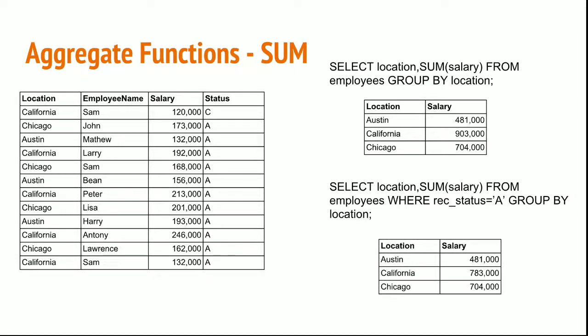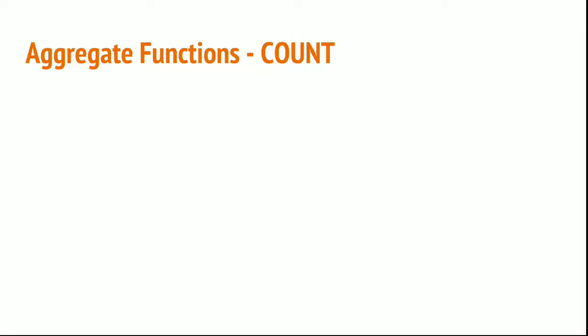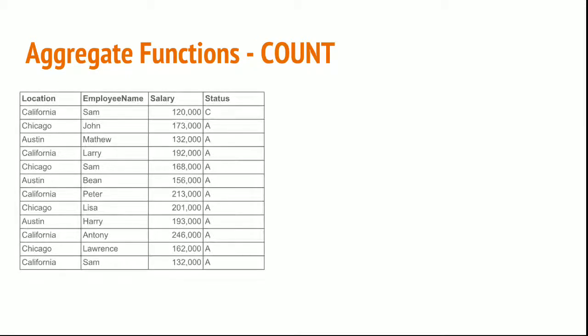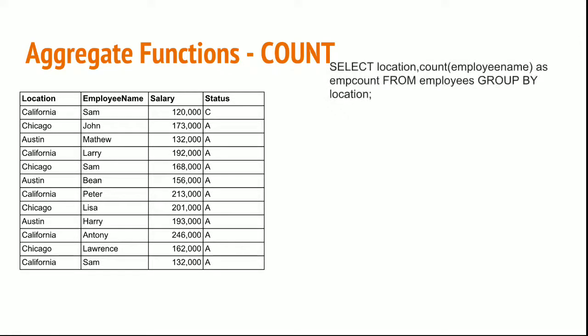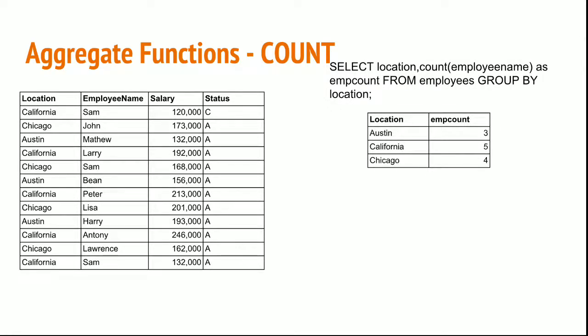This will give only the active employees' salary, making the California salary 782,000. For the COUNT function — if you want to count the number of employees in a particular location, you can use: SELECT location, COUNT(employee_name) AS employee_count FROM employees GROUP BY location. This groups by location and counts employees; in California you see five, but you only have four employees because Sam's record is duplicated.